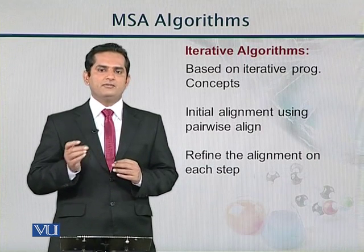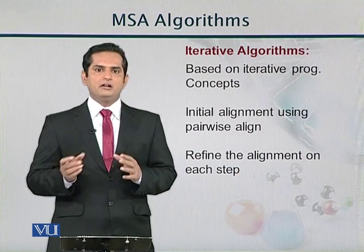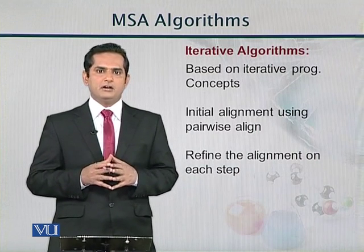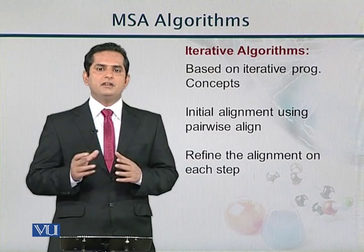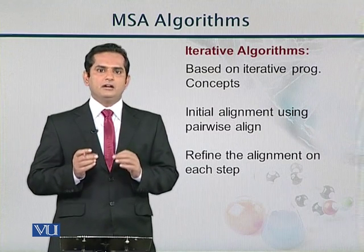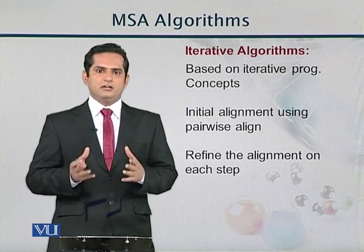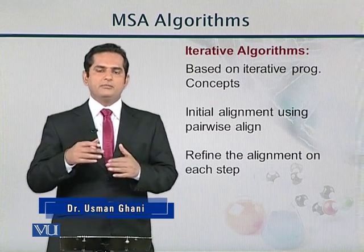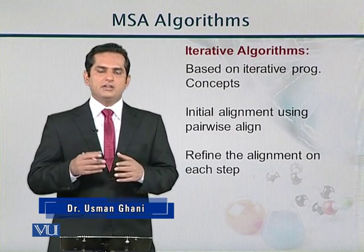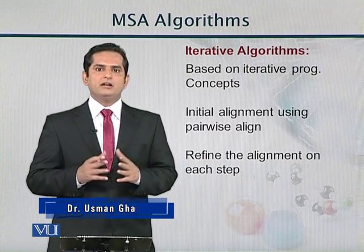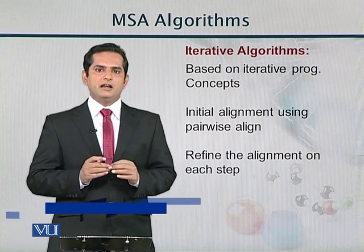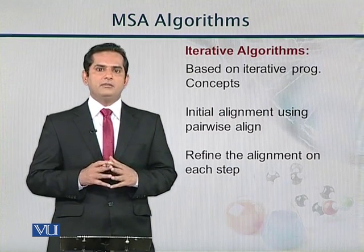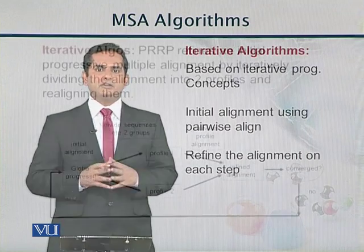Similar to progressive multiple sequence alignment, iterative methods try to find the closest sequences at the first step. But the difference is that they do not keep the initial alignments as they are. If there is an alignment that increases the global score, they will change the initial alignments. In progressive MSA, we cannot re-align initial alignments, but with iterative alignment we can.